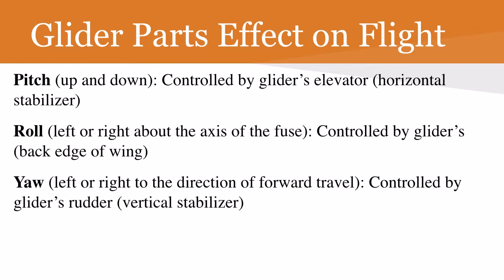Now, the roll. The roll is left or right about the axis of the fuselage. One way to think about this: remember as a kid log-rolling down a hill — your face was constantly looking in different directions. That is similar to the roll that happens in your glider. The roll is left or right about the axis of the fuselage, where your facing direction changes relative to your body's axis. This is controlled by the glider's aileron — that's the back edge of the wing.